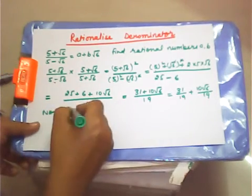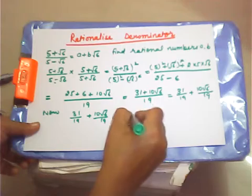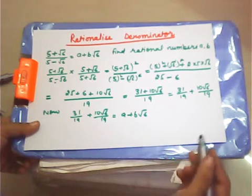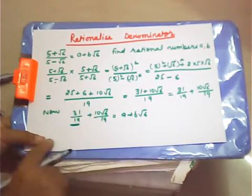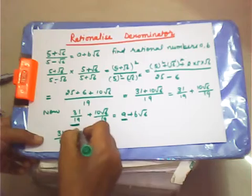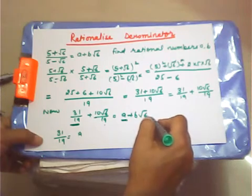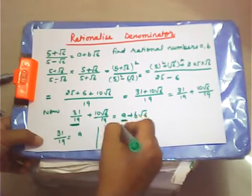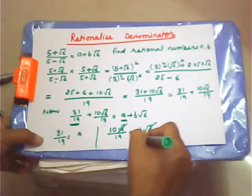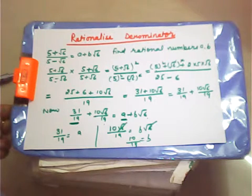So 31/19 + 10√6/19 = A + B√6. Rational numbers are equated to rational numbers, so 31/19 = A. The irrational parts: 10 root 6 over 19 = B root 6, and root 6 cancels, giving B = 10/19. Therefore A = 31/19 and B = 10/19.